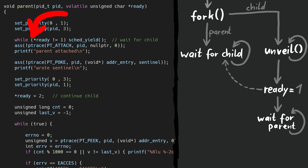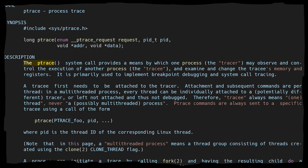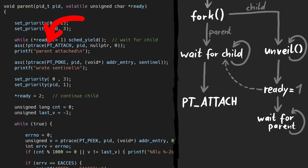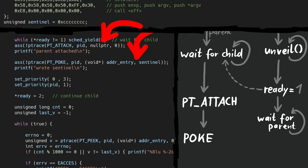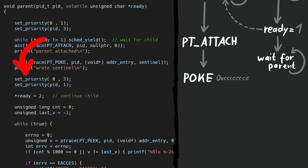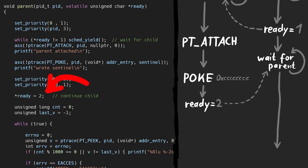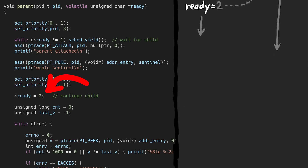The parent now calls ptrace attach. The ptrace system call provides a means by which one process, the tracer, may observe and control the execution of another process, the tracee, and examine and change the tracee's memory and registers. So the parent attaches with ptrace to the child, then calls poke to copy data to the address in the tracee's memory — writing the data 0xcccccccc to the entry point address of the child process. Then we change the scheduling priority of the child in the parent process, which probably helps with winning the race condition. Now the parent writes 2 into the shared memory, which means the child drops out of the while loop and continues. But this time the parent doesn't wait — child and parent now execute at the same time.